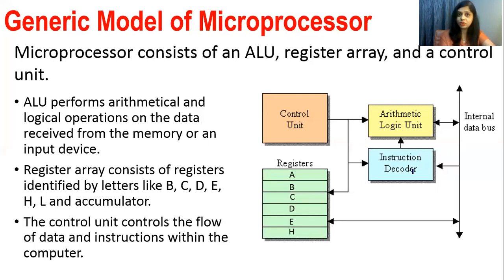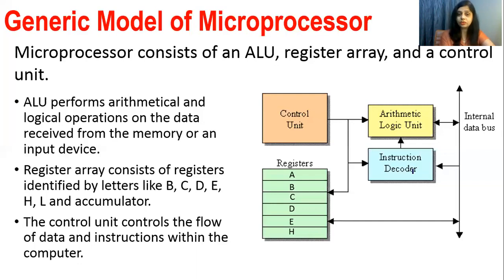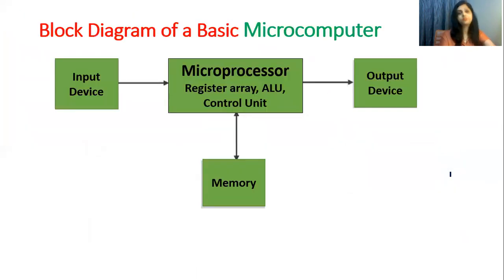The instruction decoder finds out the meaning of each binary sequence — for example, whether it means add, subtract, or something else. This is what the instruction decoder does. There are also buses inside the microprocessor.